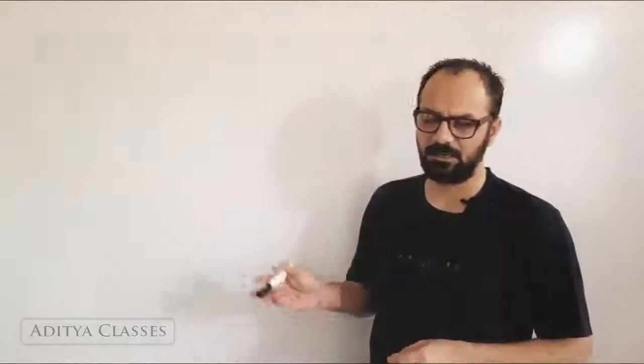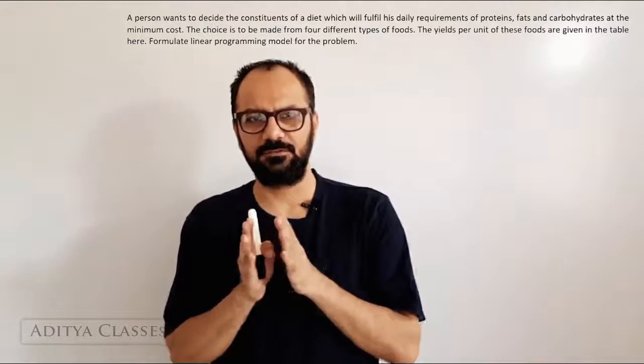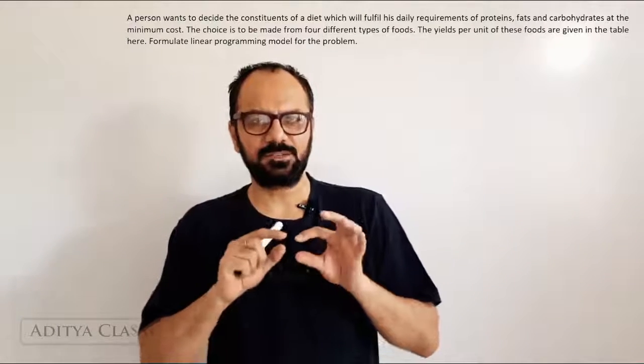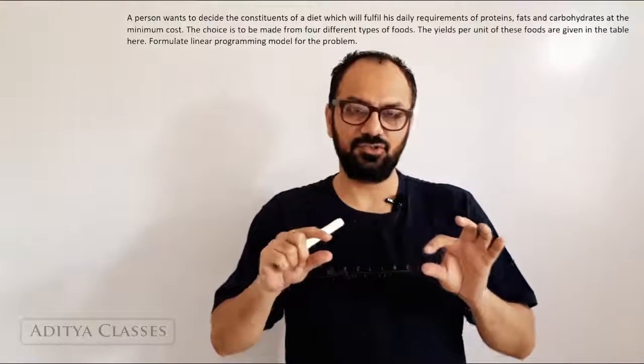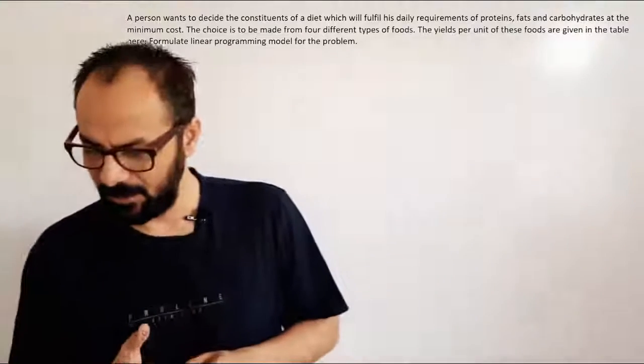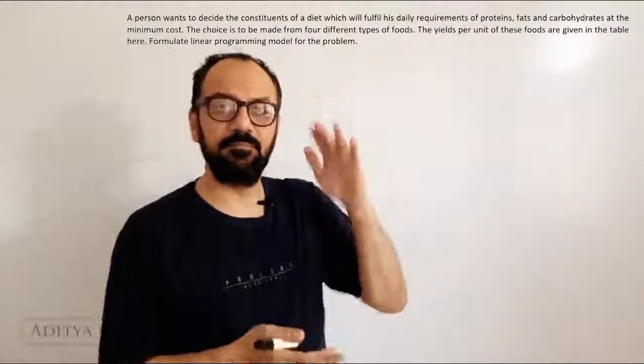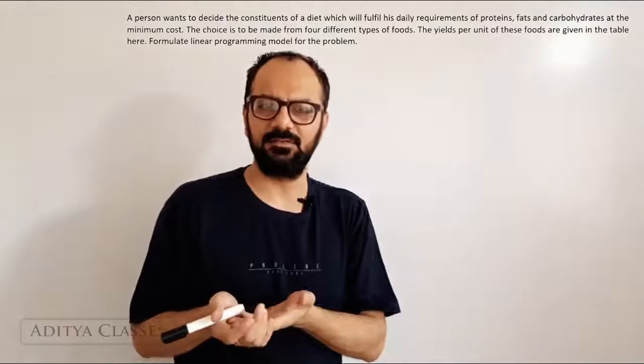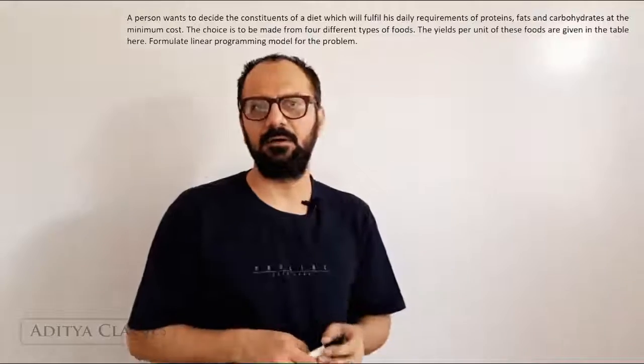So now that you have seen the problem, the situation is that we have four foods. We have their prices, their costs and we need to consume certain amount of fats, proteins and carbohydrates. Now, I should consume these quantities of fats, proteins and carbohydrates which are proteins 800, fats 200 and carbohydrates 700 at minimum possible cost because this is what I need to consume for my health and I wish to achieve this at minimum cost.